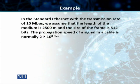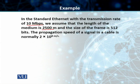In this example, we have a standard Ethernet with a transmission rate of 10 megabits per second. We are assuming the length of the medium is 2,500 meters, the size of the frame is 512 bits, and the propagation speed of the signal in the cable is 2 × 10⁸ meters per second.